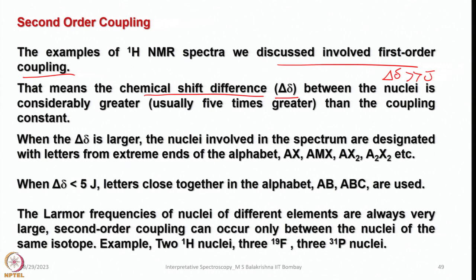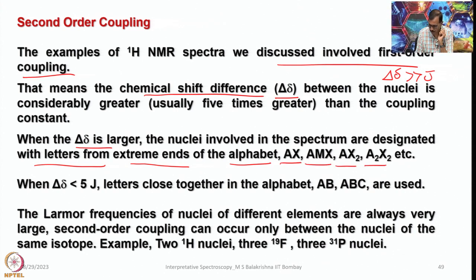When delta-delta is larger, the nuclei involved in the spectrum are designated with letters from the extremes of the alphabet — for example, AX, AMX, AX₂, A₂X₂ — depending upon how many such nuclei are there in a given molecule. When delta-delta is less than 5J, that means the chemical shift difference is much smaller than the coupling constant, and for such a system we use letters close together in the alphabet — for example, AB, ABC, A₂BC.